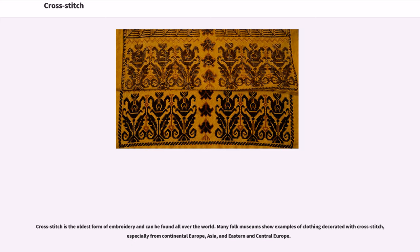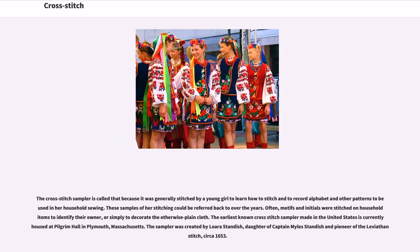Cross-stitch is the oldest form of embroidery and can be found all over the world. Many folk museums show examples of clothing decorated with cross-stitch, especially from continental Europe, Asia, and Eastern and Central Europe. The cross-stitch sampler is called that because it was generally stitched by a young girl to learn how to stitch and to record alphabet and other patterns to be used in her household sewing, so these samples of her stitching could be referred back to over the years.